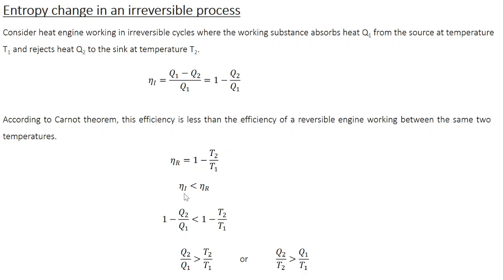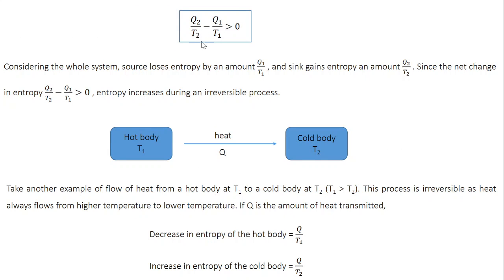From Carnot theorem, eta_I is less than eta_R. Substituting for eta_I and eta_R, you get 1 minus Q2 by Q1 is less than 1 minus T2 by T1. If you interchange the diagonal terms, you get Q2 by T2 is greater than Q1 by T1. In other words, Q2 by T2 minus Q1 by T1 is greater than 0.